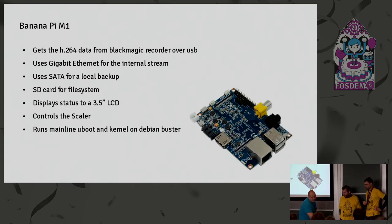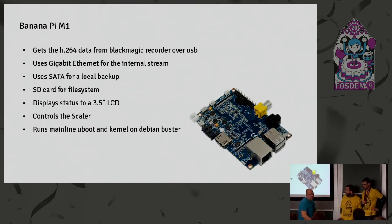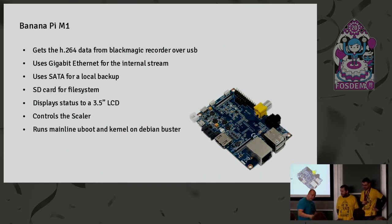We use an SD card for the file system. We display status on that black thing you saw in front of the box. It controls the scaler, which is probably the most interesting hack of the last few years. Since last year we're running a mainline kernel because of all the work of the Sunxi community — we threw Paul Kocialkowski LCD work and he implemented that for us. He was our hardware enablement dev room manager the last two years and we miss him and hope he comes back next year.